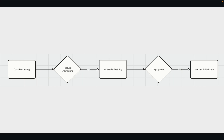Here is a simple diagram to help you understand. You have data processing — you may have a lot of data you want to use — then you do feature engineering on top of that, then feed it to a machine learning model and get it trained, then do deployment, and then monitor and maintain. You want to automate all these steps, and that's where MLOps comes in.